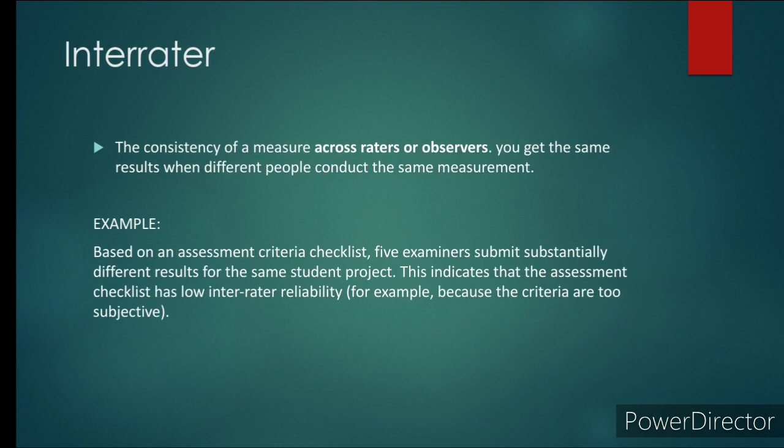Inter-rater is the consistency of a measure across raters or observers. Do you get the same result when different people conduct the same measurement? For example, based on an assessment criteria checklist, five examiners submit substantially different results for the same student project. This indicates that the assessment checklist has low inter-rater reliability, for example because the criteria are too subjective.